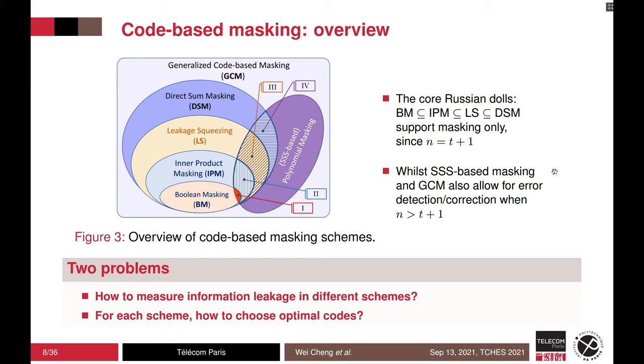The connections between above masking schemes are shown in Figure 3. We highlight two groups. First one on the left, we have RSM's dual, including Boolean masking, inner-product masking, leakage squeezing, and also direct sum masking. They all have no redundancy. On the right, we have polynomial masking, which is based on Shamir's secret sharing. It can be configured with redundancy in a glitch-free context. Therefore, two natural questions that arise are how to measure information leakage in different schemes, and secondly, how to choose the optimal parameters or optimal code for each scheme.